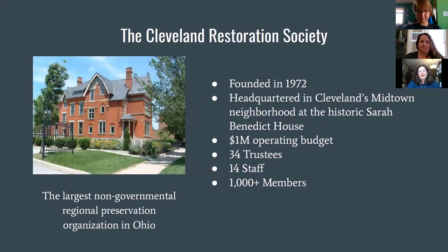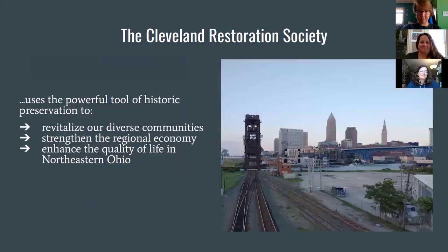To start us off and introduce us — we are part of the Cleveland Restoration Society, which is the largest non-governmental regional historic preservation group in Ohio. We're a historic preservation non-profit headquartered in the Midtown area in Cleveland, in this beautiful house, the Sarah Benedict House. Founded in 1972 with a million dollar operating budget, 34 trustees, 14 staff, and over a thousand members. We've been doing historic preservation work in Northeast Ohio for a really long time.